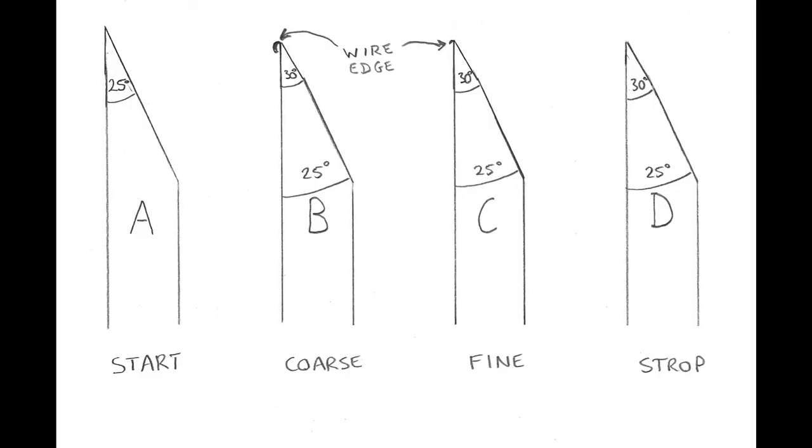The honing process works in three stages. Right now our chisel is at stage A. It has a 25 degree bevel at the tip.